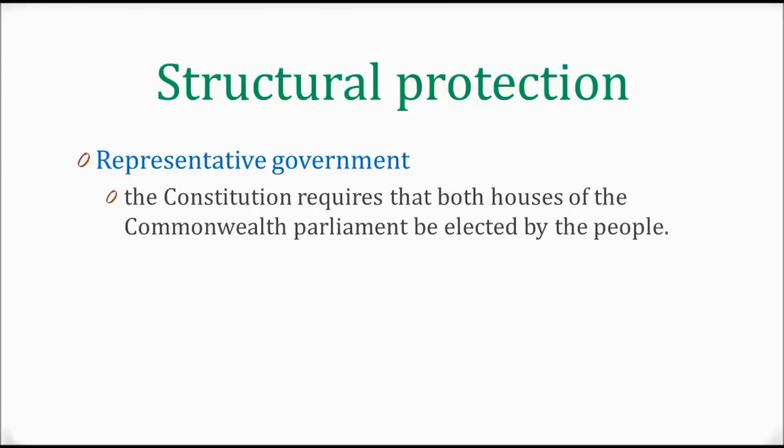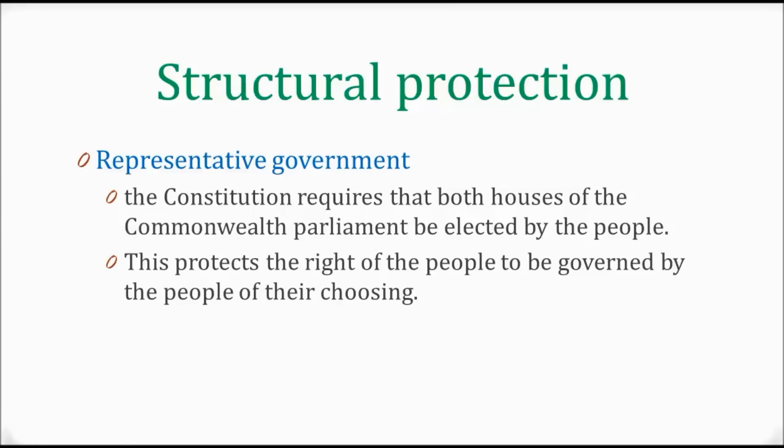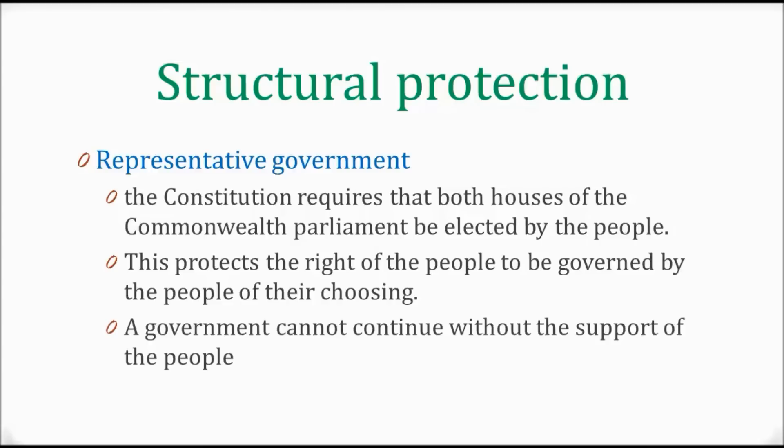For representative government, the Constitution sets out representative government by requiring that both houses of the Commonwealth Parliament are elected by the people. That therefore protects the rights of the people to be governed by the people of their choosing. We have regular elections so that if people disagree with the government or think they're gaining too much power, they have the option to vote out the government. The government cannot continue without the support of the people at every election.